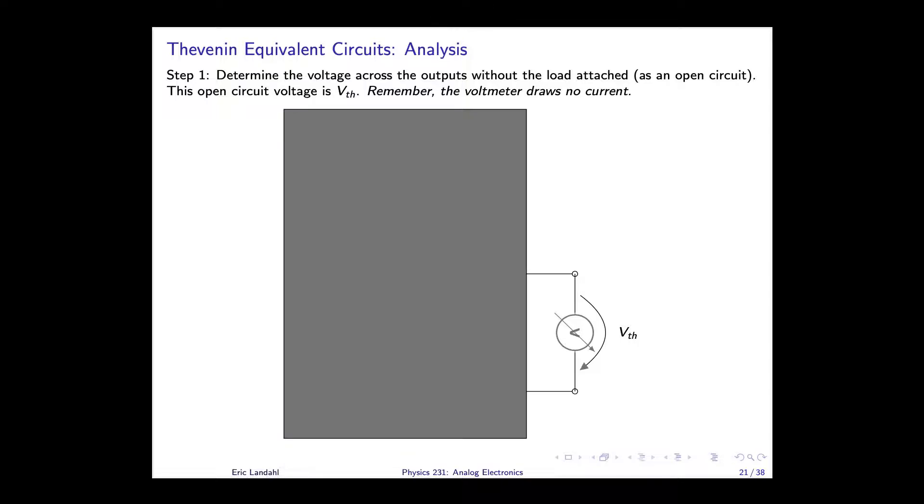To determine the Thevenin equivalent circuit, we're going to do an analysis. Now I want to emphasize, this is an analysis. This is not something which you generally should do experimentally in the way I have described. Particularly if you do this with line voltage, it could be extremely hazardous. You can do it with our voltage divider circuits generally, and actually you'll be doing that in the assignment. But these are thought experiments, ways to think about analyzing a problem, and not measurements necessarily made exactly the way I described.